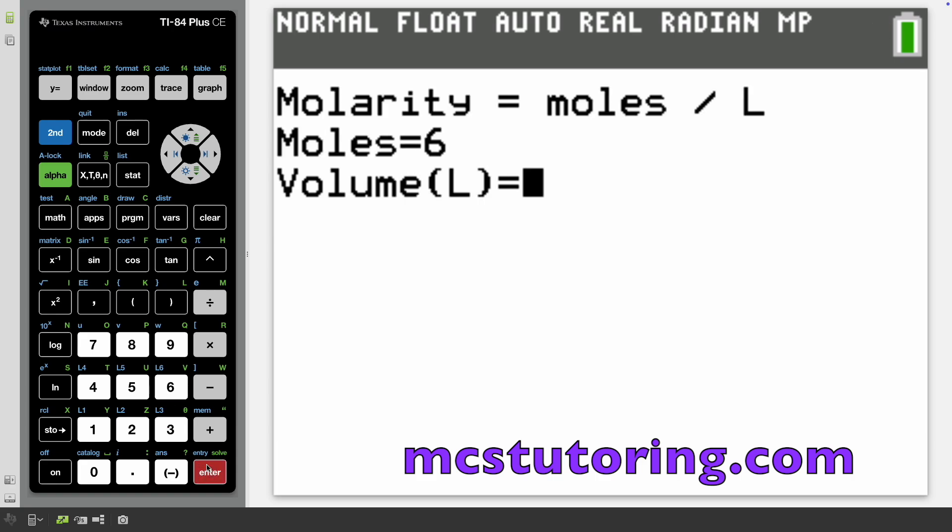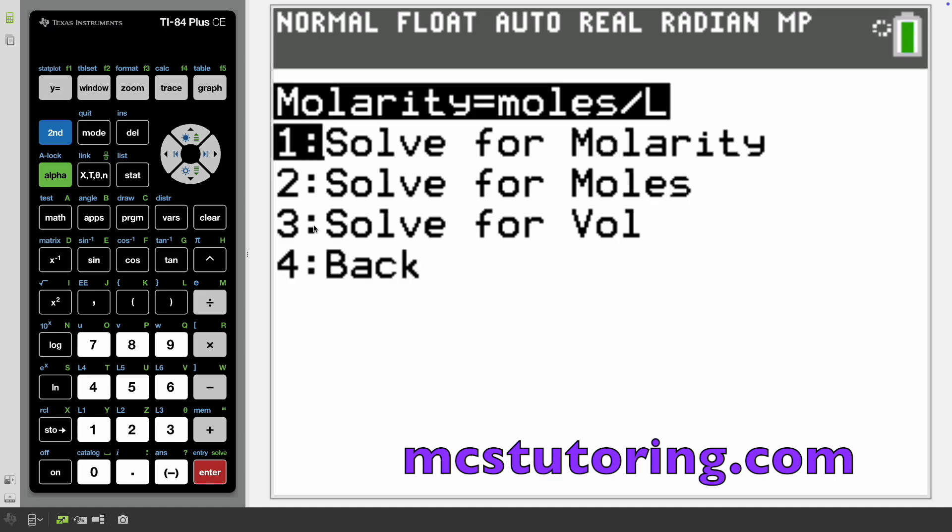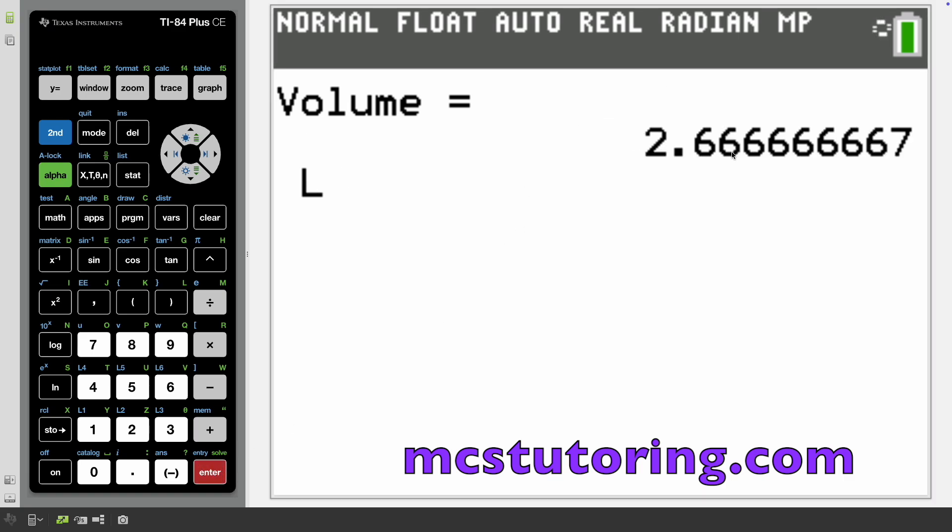We've got six moles and nine liters. The molarity equals 0.666 repeating. Now I want to show you, I want to solve for volume. Because they're tricky, they're not just going to ask molarity. If this is the molarity and we give you a certain number of moles, what's the volume? We got you covered. The volume would equal the moles divided by the molarity. Let's say we have eight moles and the molarity is three. The volume is 2.66 repeating liters.